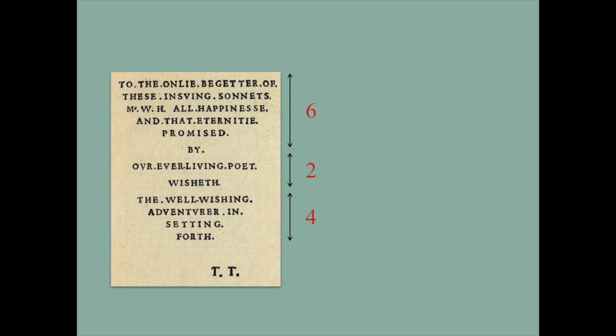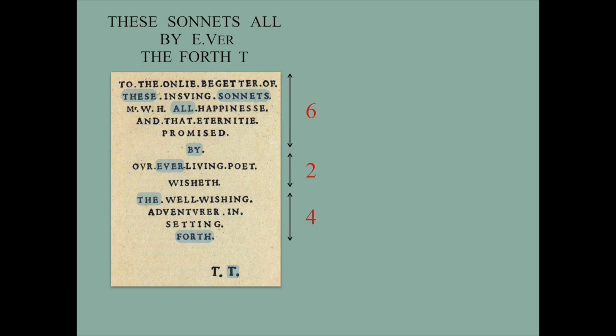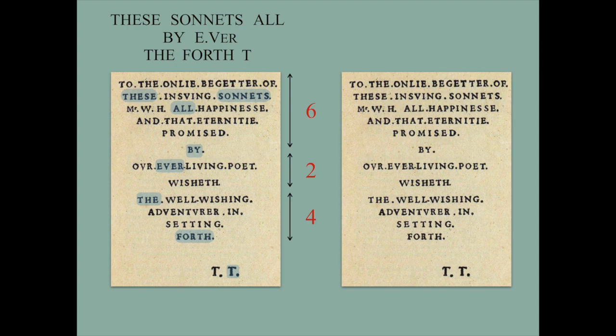Now we go to the dedication page. There we have the dedication set in three triangles which are six, two, and four lines long respectively. If we take 6-2-4 as a kind of code and count the words as demarcated by the dots and hyphens in the order 6-2-4, we get the message: 'these sonnets all by ever the fourth T.' We'll set aside what the fourth T means for now — that's in part three of 'Where Is Shakespeare Really Buried?' — we're just interested in who wrote these sonnets: 'these sonnets all by ever,' meaning Edward de Vere.